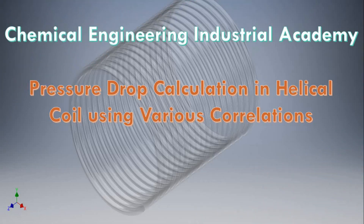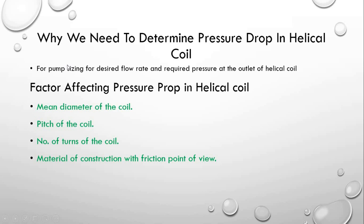In this Industrial Academy tutorial, I will explain how to calculate pressure drop in a helical coil using various correlations developed by scientists and engineers. The reason we need to determine the pressure drop in a helical coil is very specific: we have to size the pump for circulation of fluid in the helical coil, and we also have to determine the pressure drop at the outlet of the helical coil for various applications in different industries, such as heating and cooling.